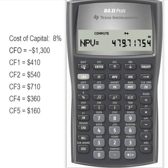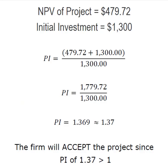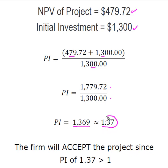We're going to use this $479.72 figure to plug into our formula to calculate the PI. This is our NPV of $479.72 and our initial investment was $1,300. Plugging into the formula, I'm going to take the NPV of the cash flows plus the initial investment, divided by the initial investment, which gives me $1,779.72 divided by $1,300. When I did that math I came out with 1.369, which I rounded to 1.37. So the profitability index for this project is 1.37, and from our decision criteria we will accept the project since this PI is greater than 1.